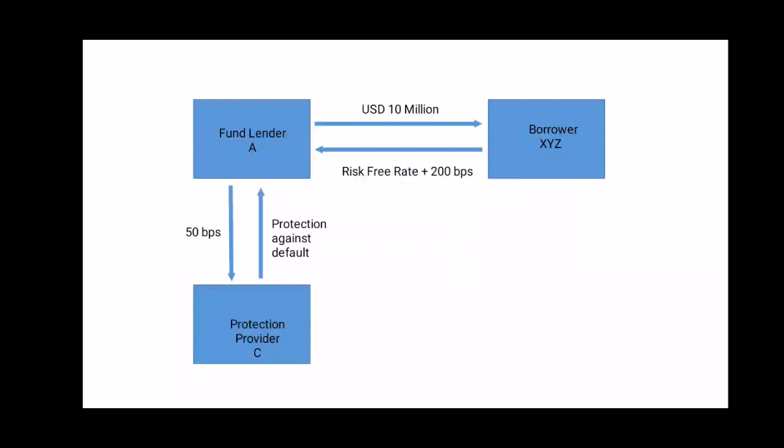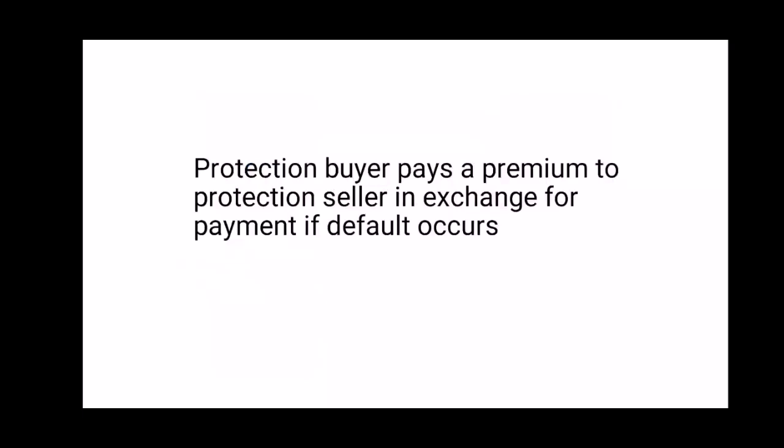Now the fund house wants to protect itself from risk, so they approach a protection provider C — you may assume C is Citigroup. The protection provider, or protection seller C, provides protection to the protection buyer, the fund house A, for which A has to pay a premium. This premium is 50 basis points in this example. The protection buyer pays a premium to the protection seller in exchange for payment if a default occurs.